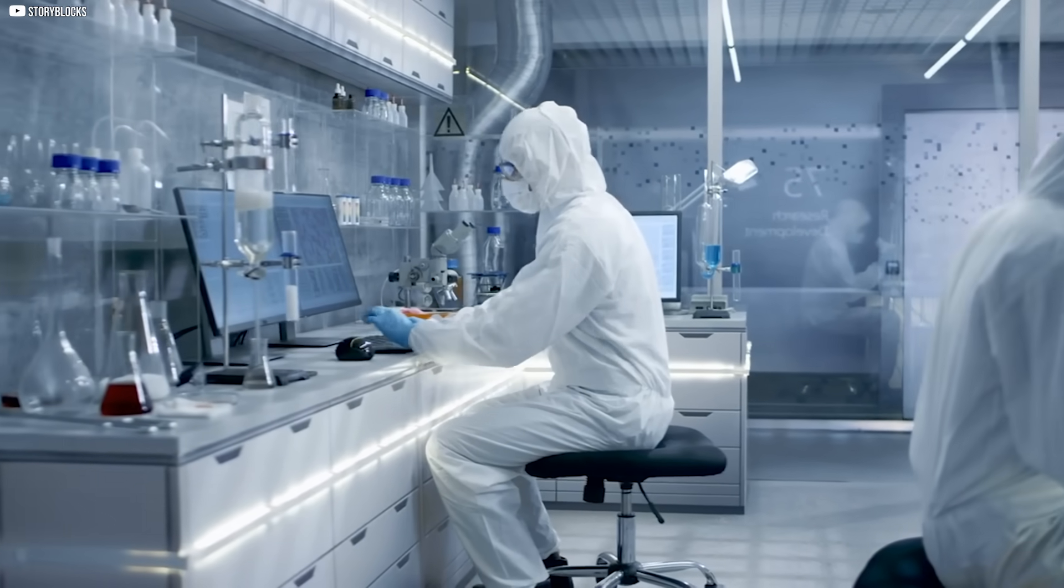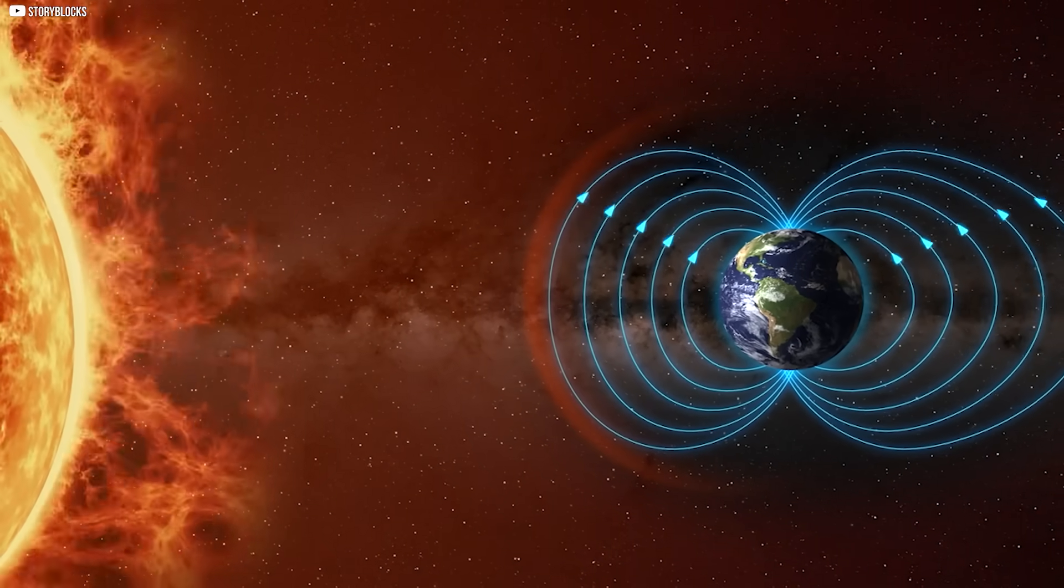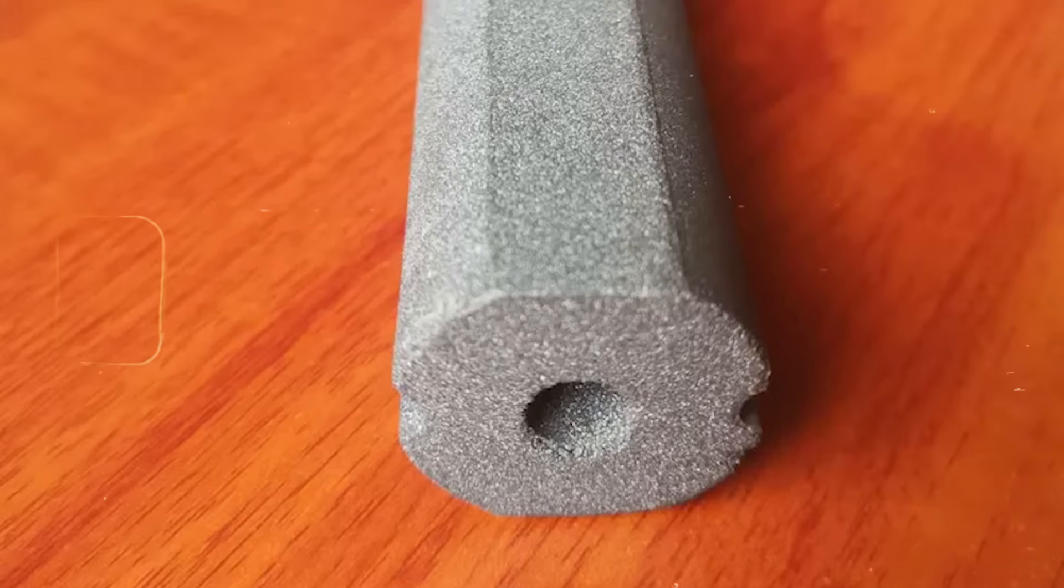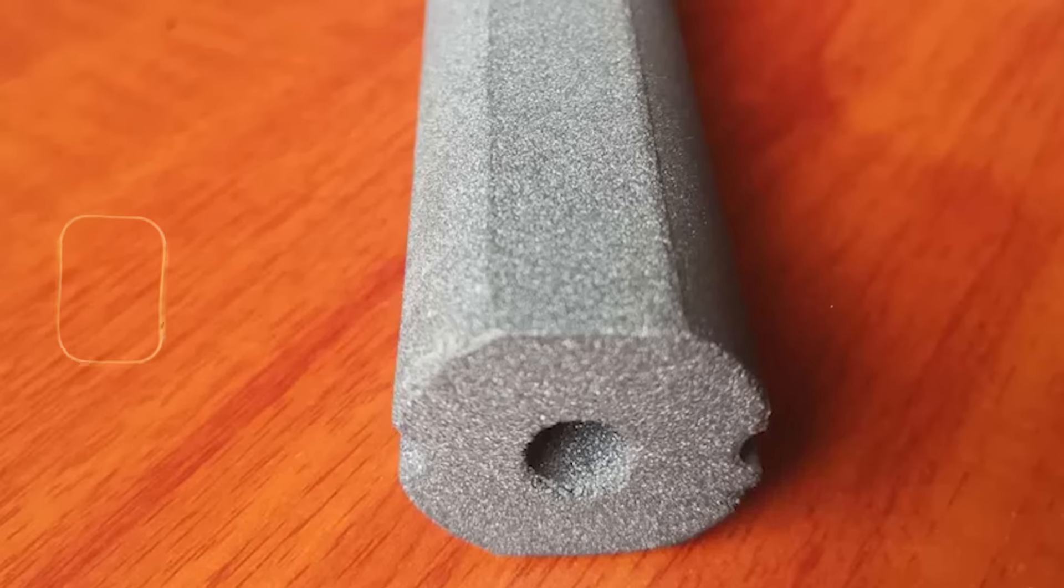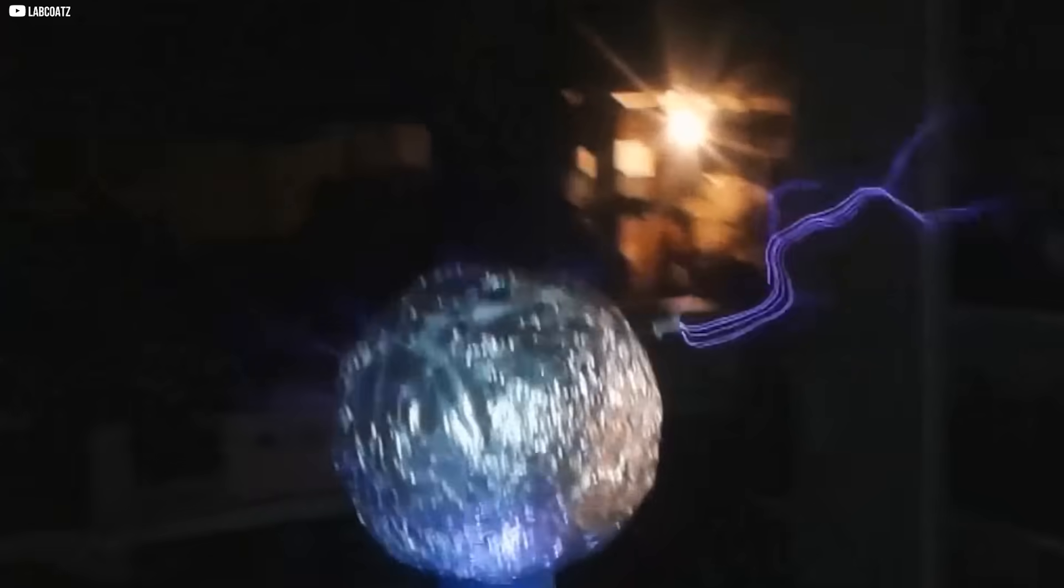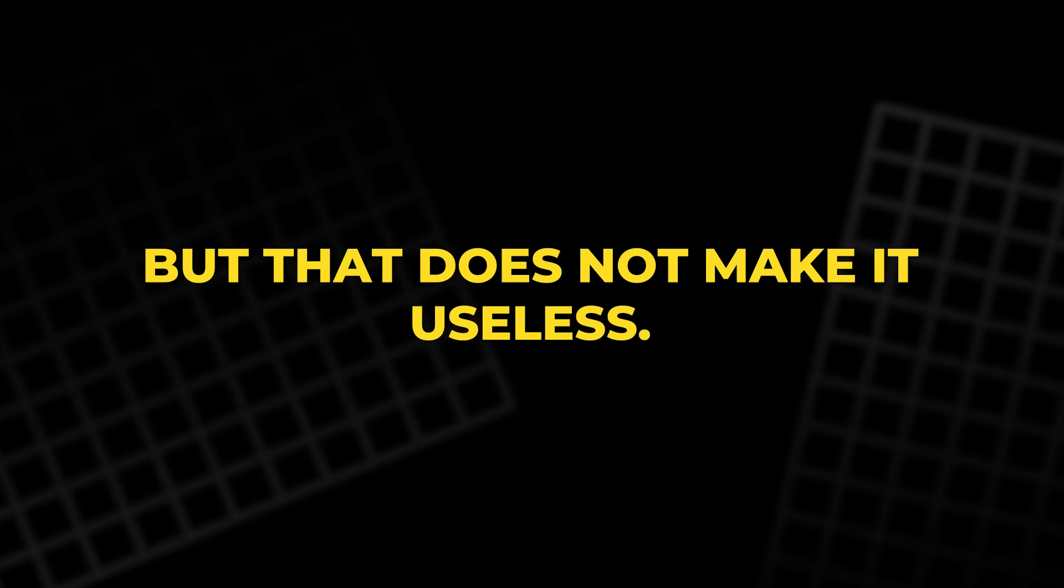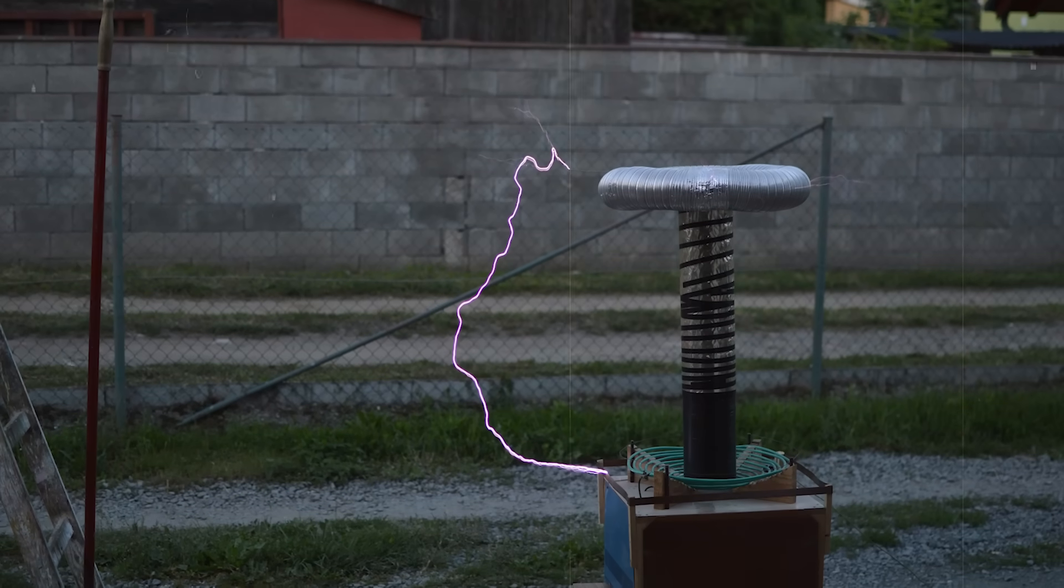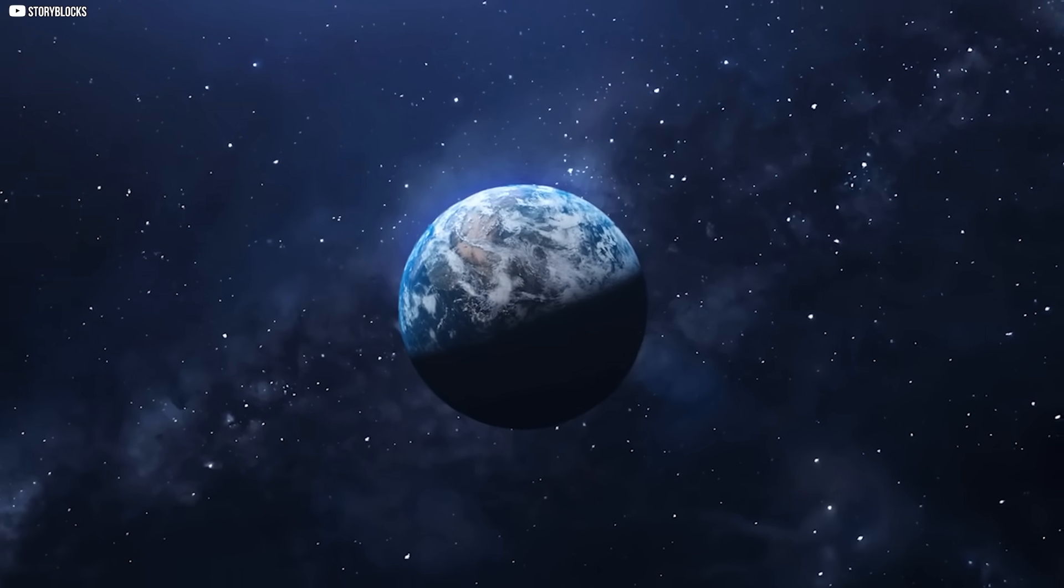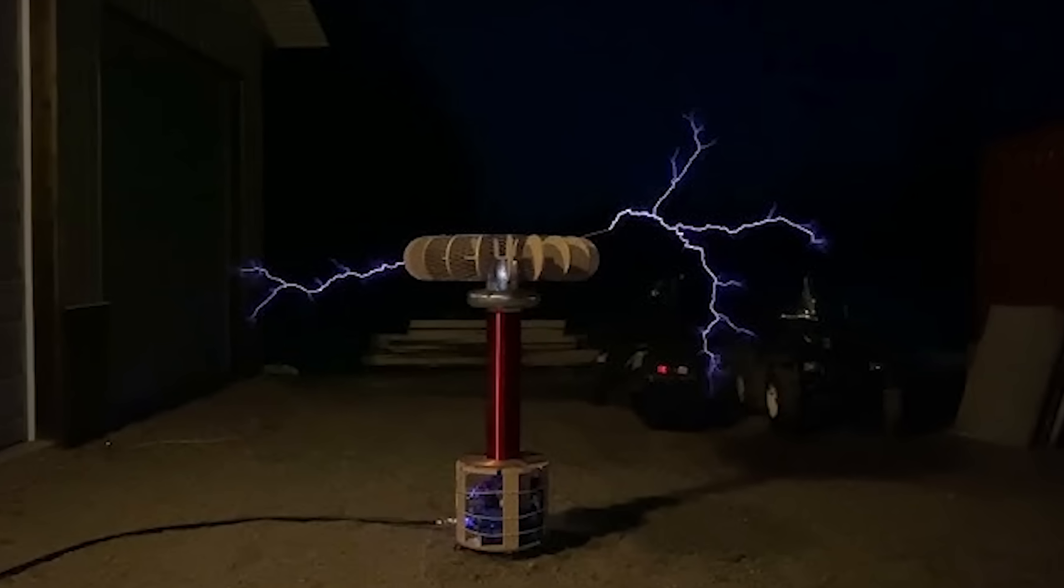The signal they found will not light cities or power homes. Earth's magnetic field is simply too weak, and the effect too delicate to ever produce large amounts of energy. Even scaling up the cylinder many times would still yield only a faint trickle of current. In practical terms, it is closer to a scientific curiosity than a new energy source. But that does not make it useless. For devices that need almost no power, tiny sensors buried in the ground, instruments left in remote places, probes drifting in space, a source that never runs dry could be valuable.